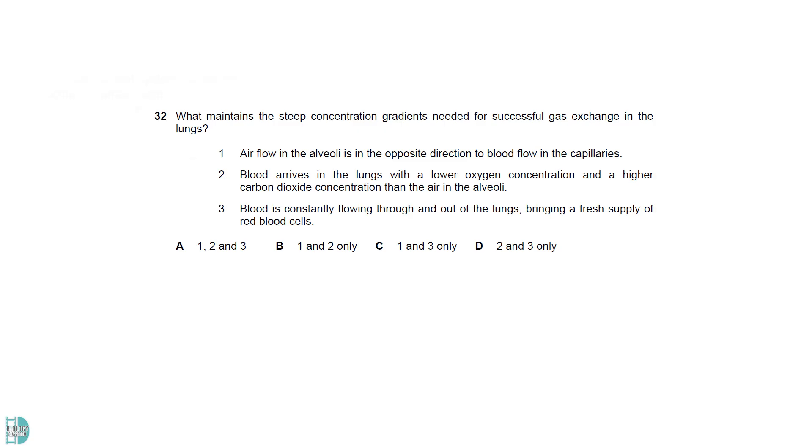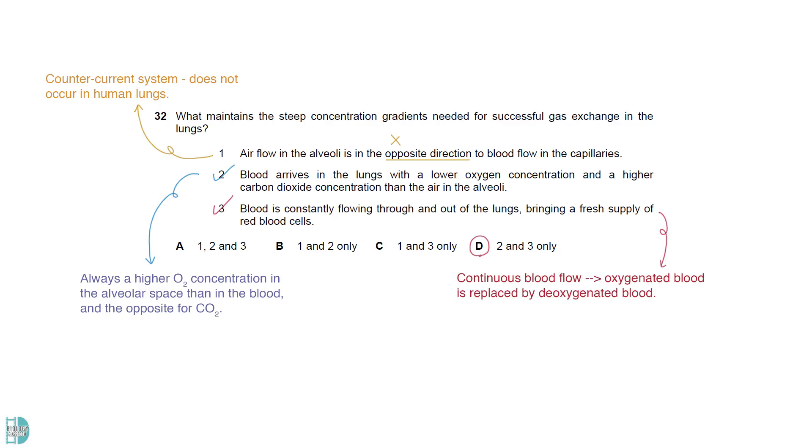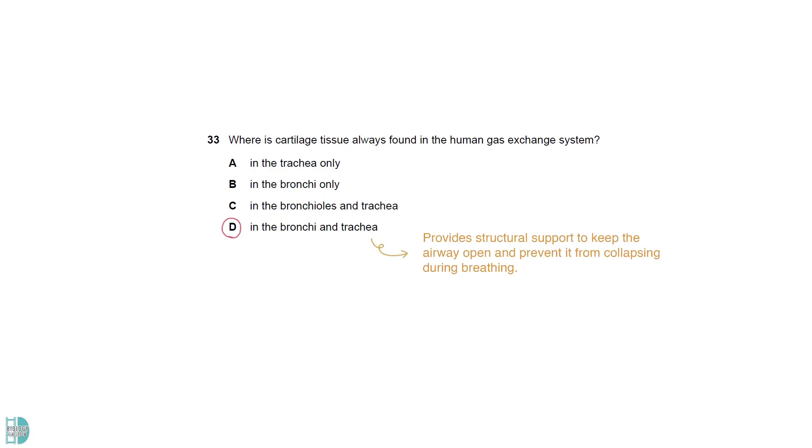One is incorrect. This describes a counter-current system which does not occur in human lungs. Two is correct. This causes a concentration difference where there is always a higher concentration of oxygen in the alveolar space than in the blood, and the opposite for carbon dioxide. Three is correct. Continuous blood flow ensures that the gradient is maintained, as deoxygenated blood is replaced by oxygenated blood. Cartilage is found in the bronchi and trachea. It provides structural support to keep the airway open and prevent it from collapsing during breathing. Bronchioles have no cartilage because they need to be flexible to allow for airflow regulation and to accommodate changes in lung volumes during breathing.